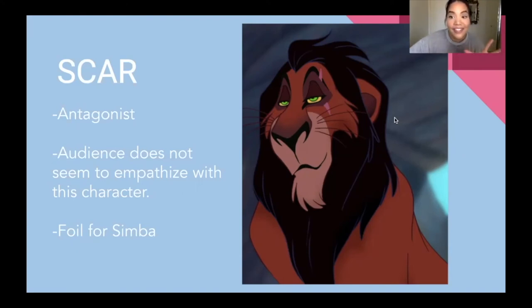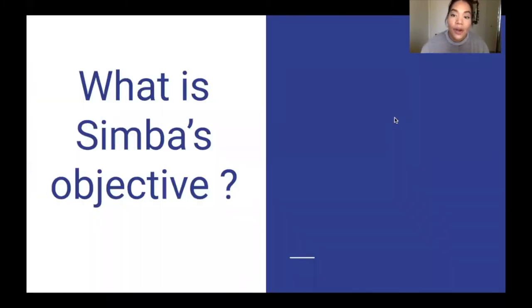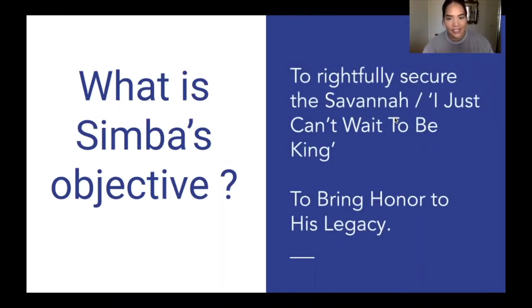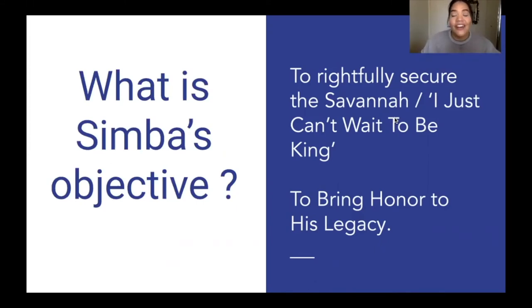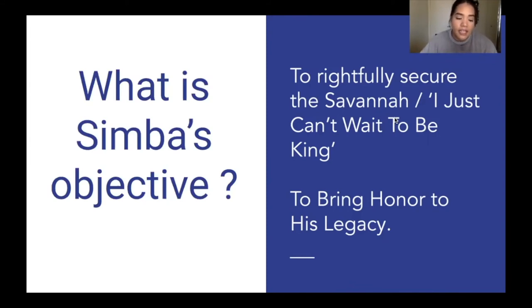Now let's apply objective, obstacle, and tactic to these characters. First, Simba: what is Simba's objective? You could argue that Simba's objective is to rightfully be the heir of the savannah. Textual evidence supporting this includes his song 'I Just Can't Wait to Be King.' One might also argue his objective is to bring honor to his legacy — he wants to make his father Mufasa proud and carry on the legacy of rightfully ruling the savannah.